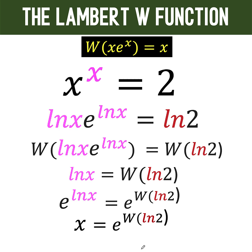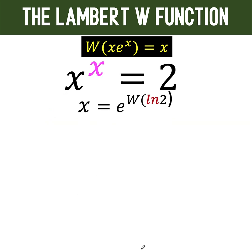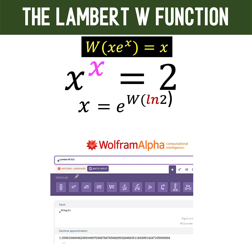Now, this right side is just a constant that we can compute using Wolfram Alpha. And taking now e raised to the Lambert W of ln of 2, that gives us a value of approximately 1.5596. And this is now the value of x.